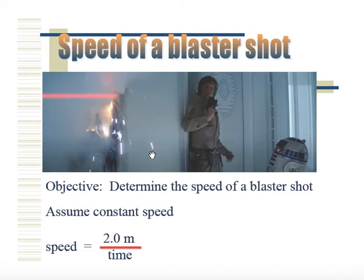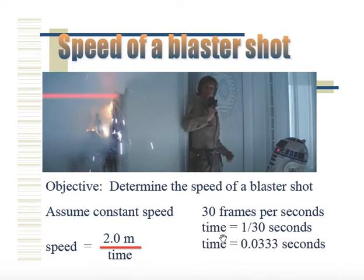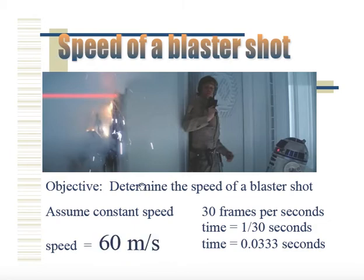So we have the distance; now we need to get the time. This video was captured at 30 frames per second. Therefore, the time is 1/30th of a second, or 0.0333 seconds, as I chose two consecutive frames. We divide the distance by our time, and our answer is 60 meters per second.